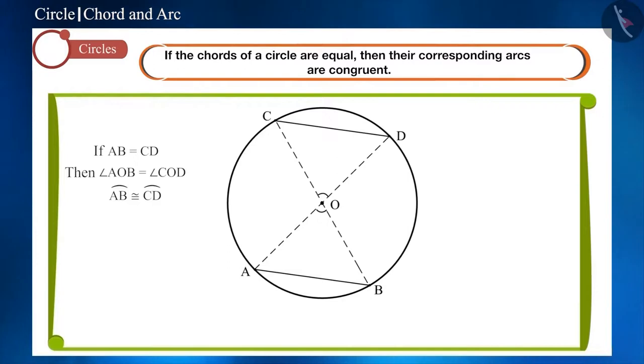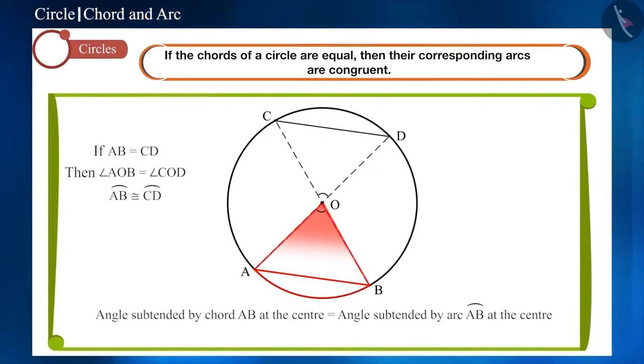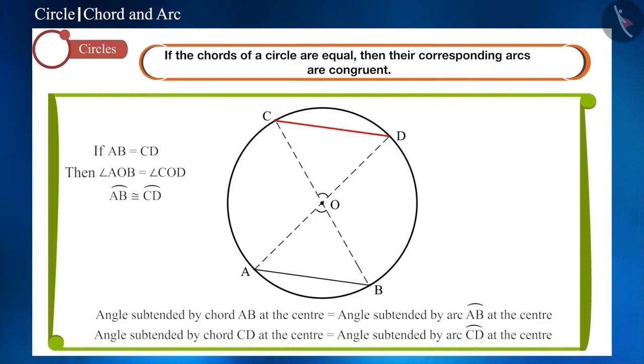If you look at the figure carefully, you will see that the angles subtended by chord AB and arc AB at the center are equal. And the angles subtended by chord CD and arc CD at the center are also equal.